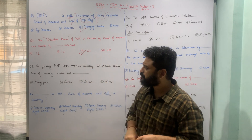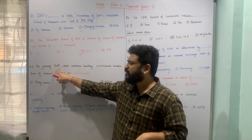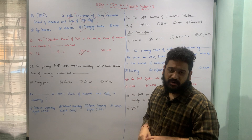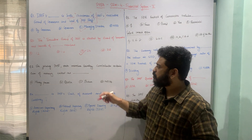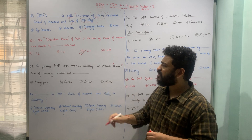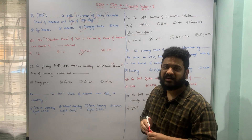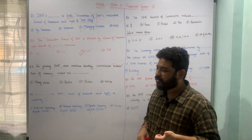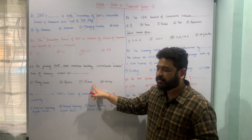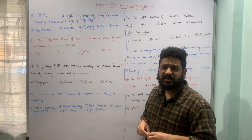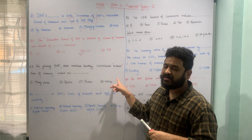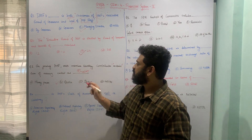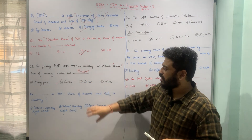On joining the International Monetary Fund, each member country contributes a certain sum of money — what is this called? The options are: A) Money Par, B) Quota, C) Share, or D) None of the above. The correct answer is B — on joining the IMF, each member country contributes a certain sum of money which is called the Quota.